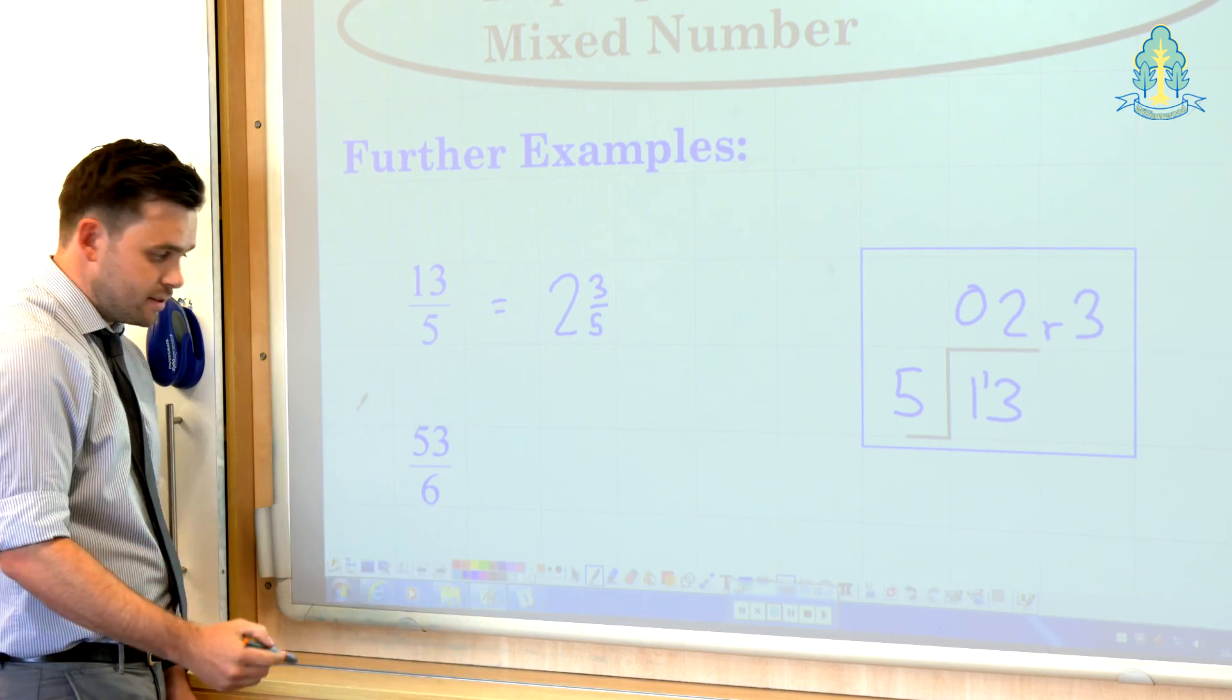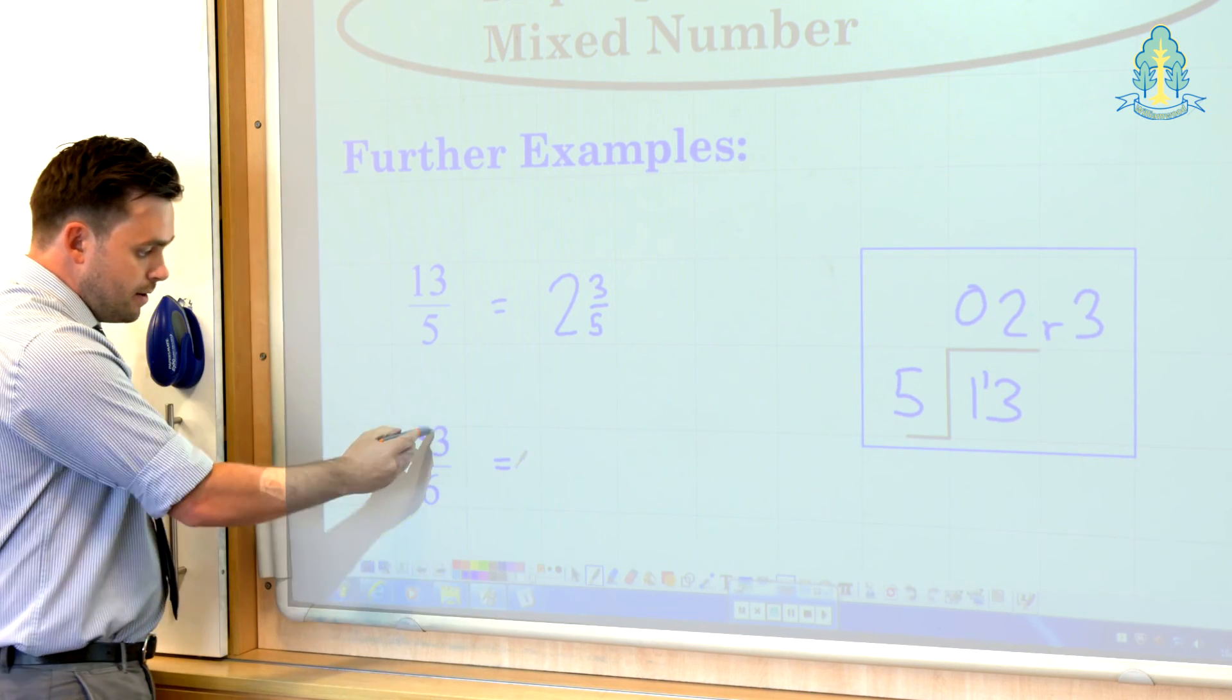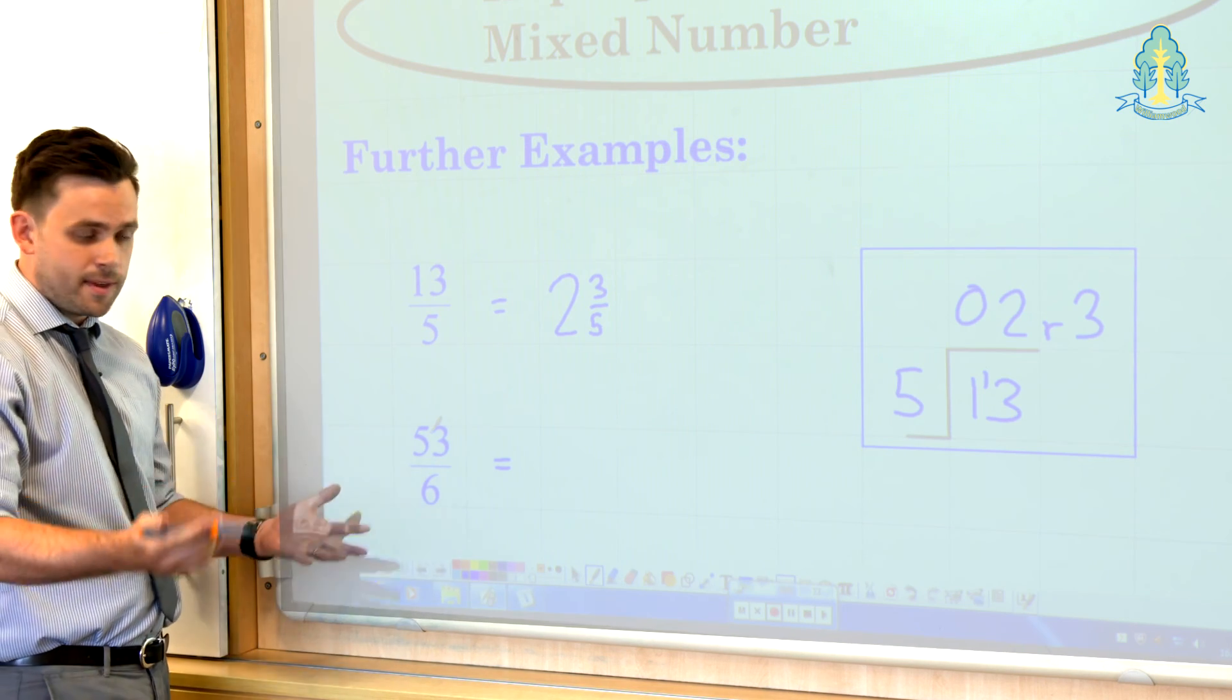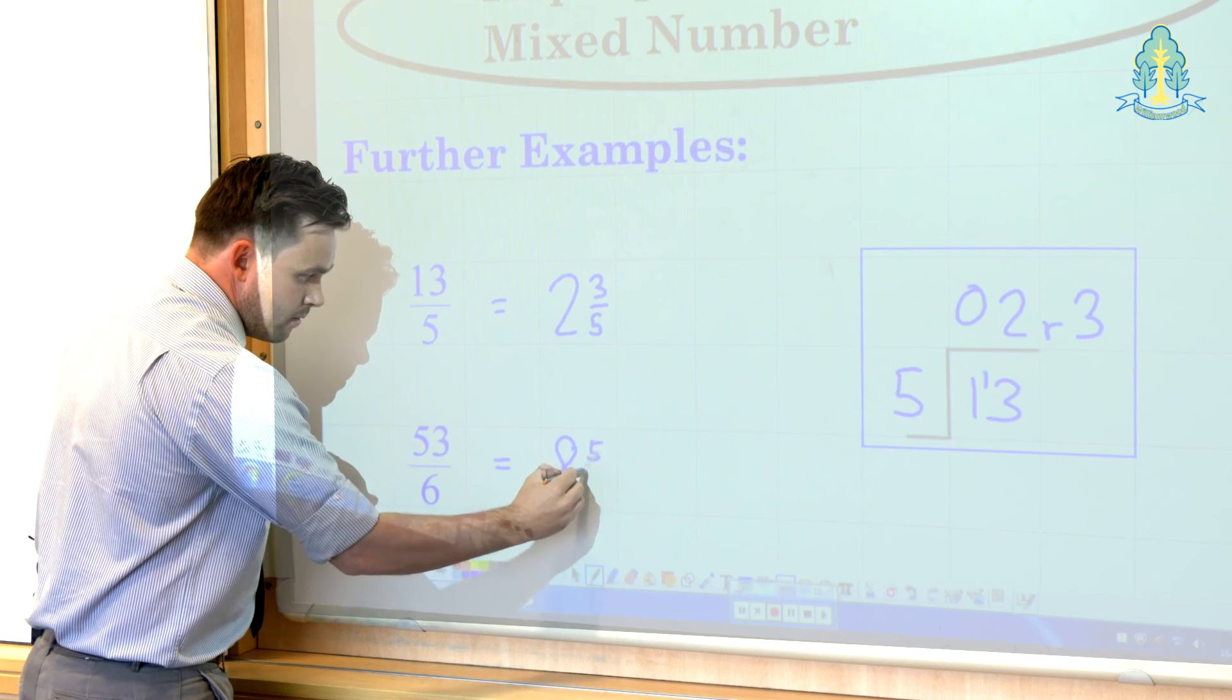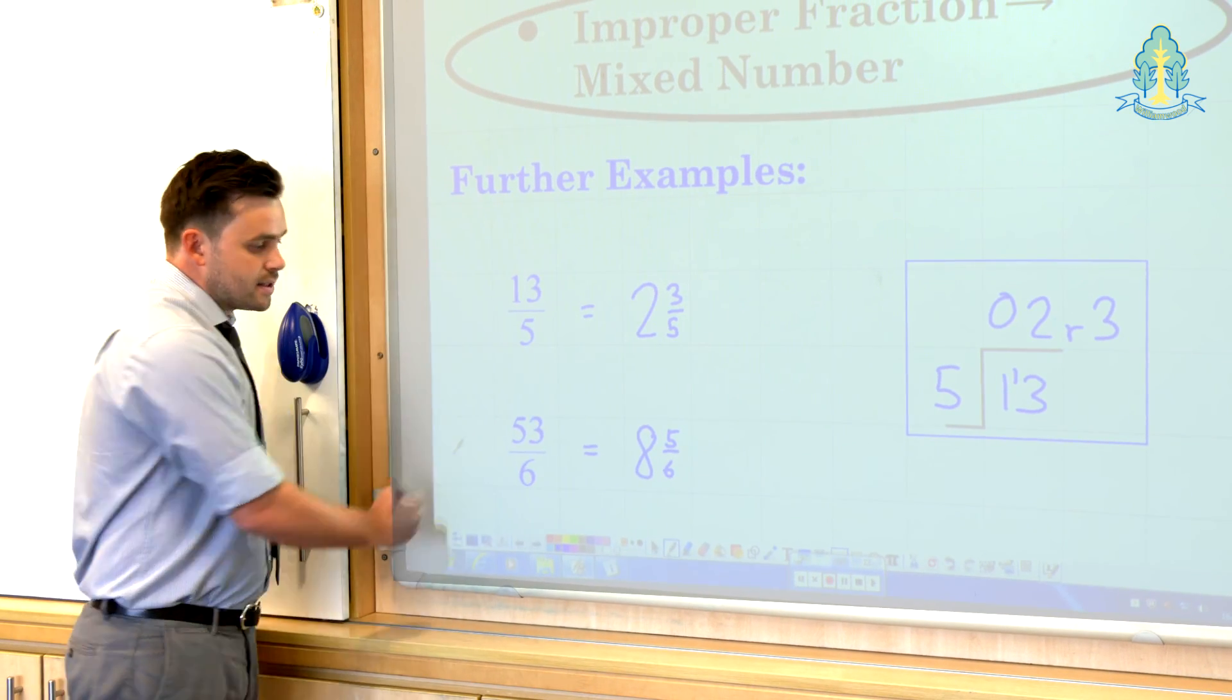And the final one, again, getting to the stage where they're doing it mentally. 53 sixths. 53 over 6 means 53 divided by 6, which is 8 remainder 5, written as 8 and 5 sixths as a mixed number.